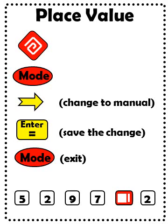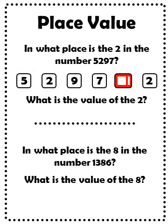Now that you are in the place value function setting, enter the number 5,297 into your calculator. Press the place value key towards the top of your calculator, and then press the number 2 and observe what happens. You should see in the display: 2 → 100. The teacher can ask a couple different questions about this information — in what place is the 2 in this number? Also, what is the value of the 2? Students can interpret that 2 → 100 means 200.